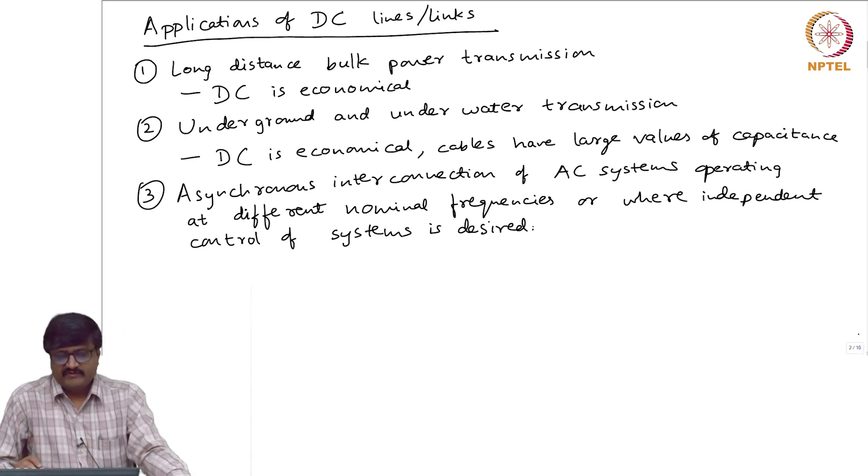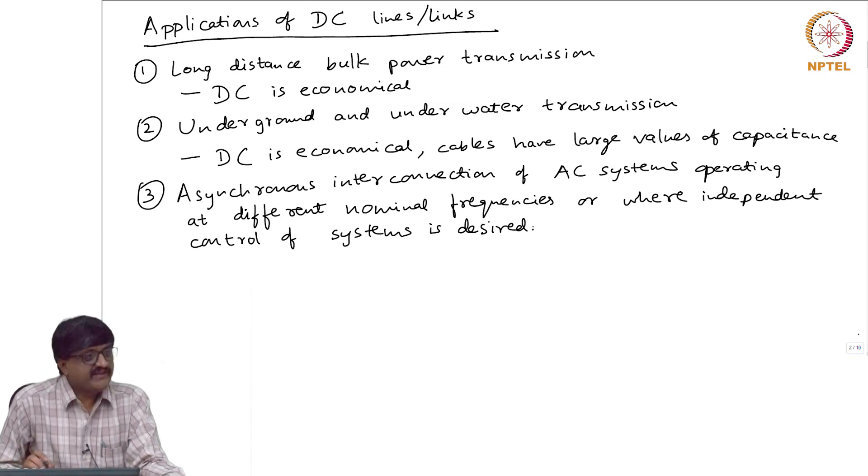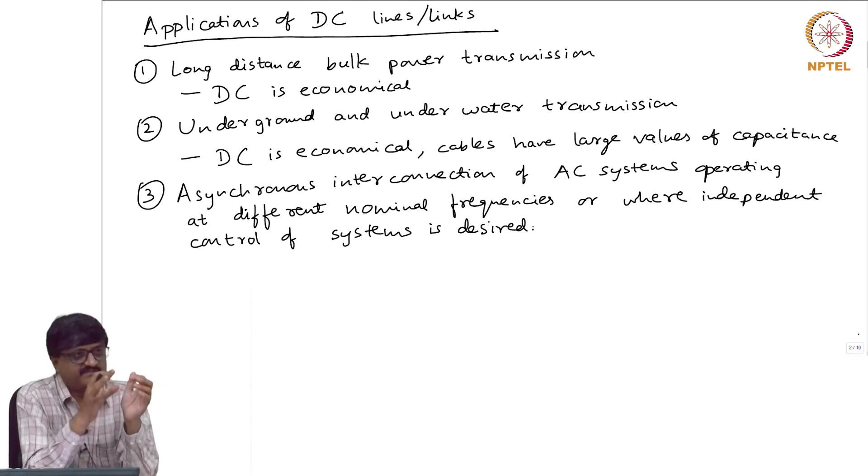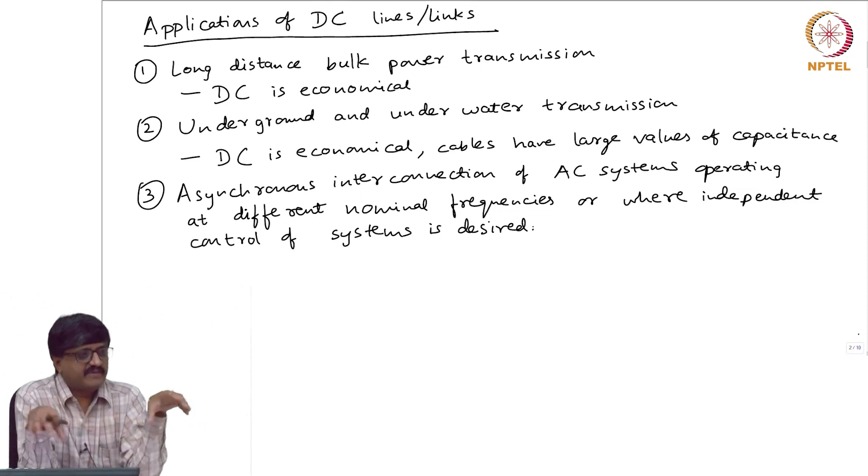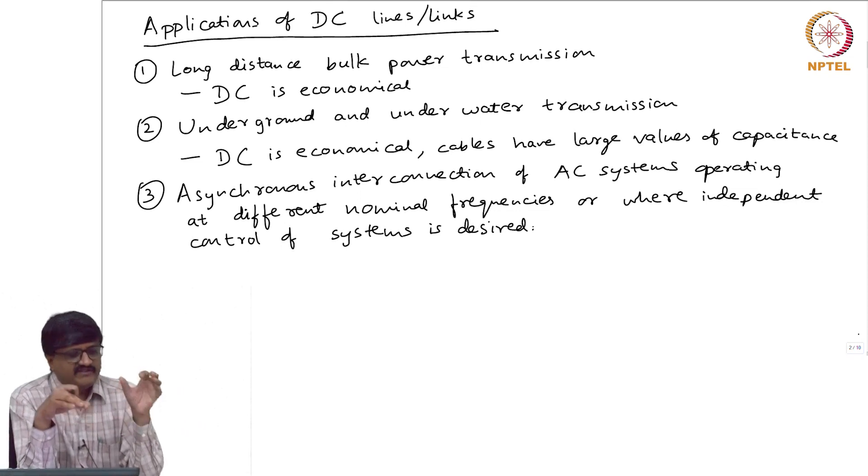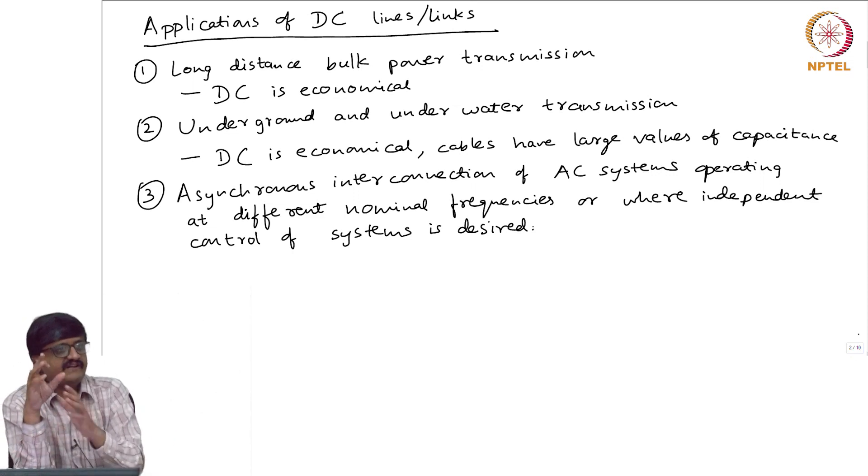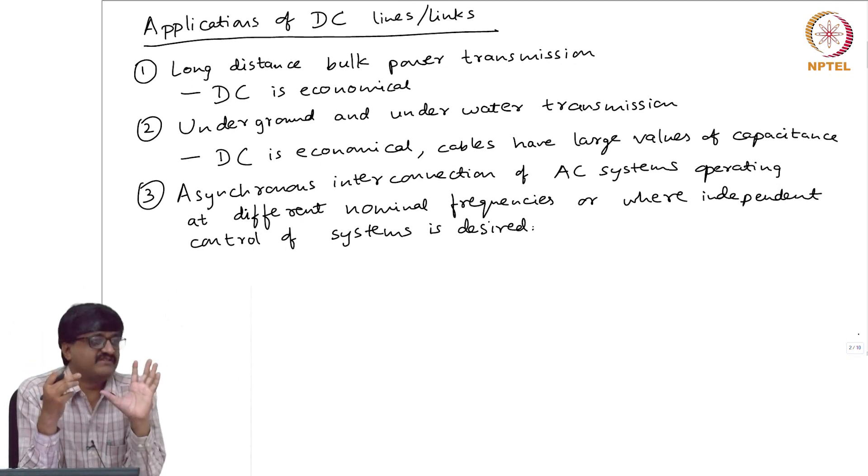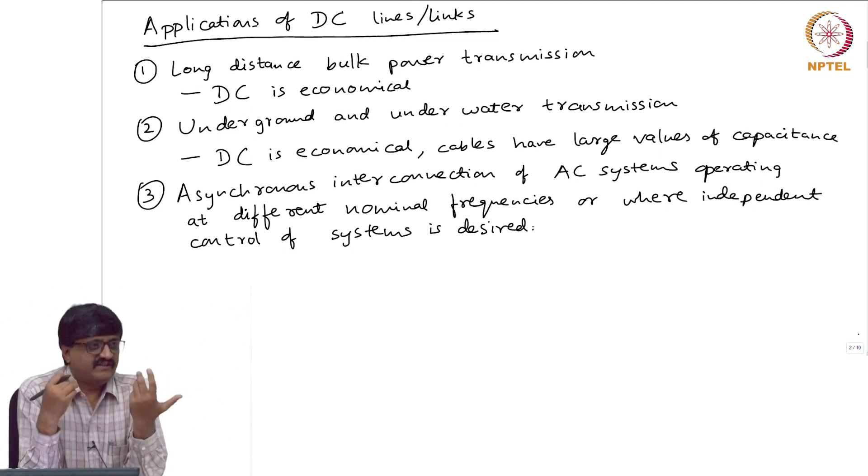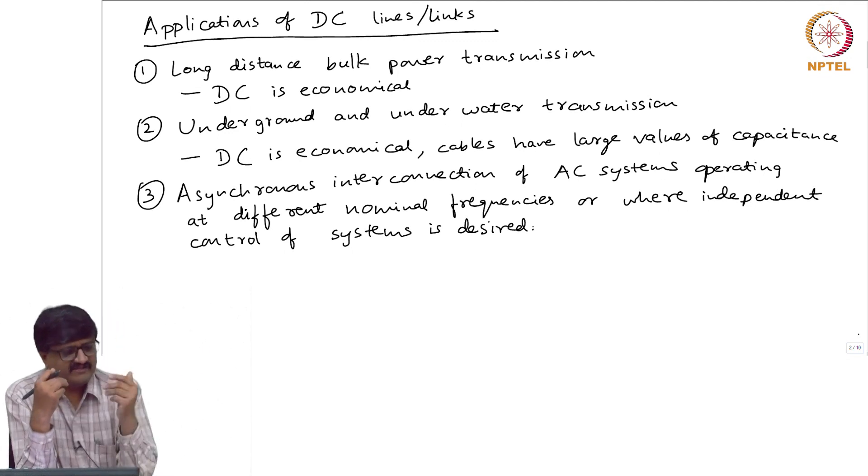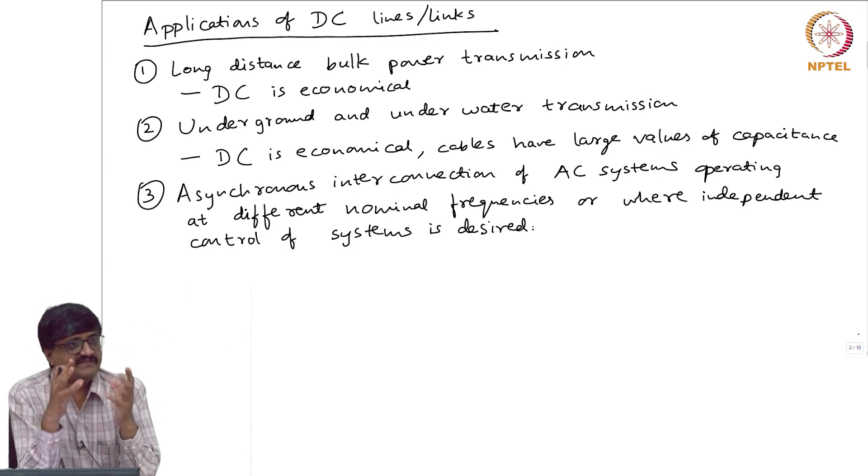In the process this will have some advantage. Suppose there is some disturbance in one AC system and the other system is connected to this original system by a DC link. It is possible that the disturbance is not propagated to the other system. If you have a DC link, it acts as a filter for the propagation of the disturbance. Disturbance can be in the form of oscillations. At some location there is a fault and the fault is cleared, then you will have oscillations. You would have studied stability, stability of a single machine infinite bus.